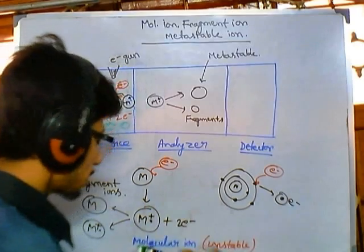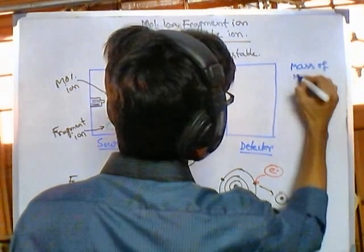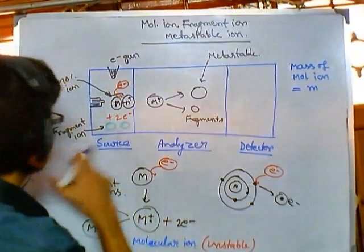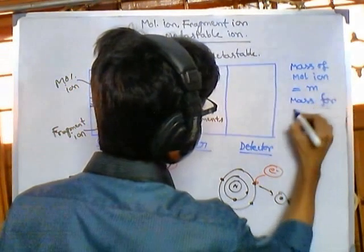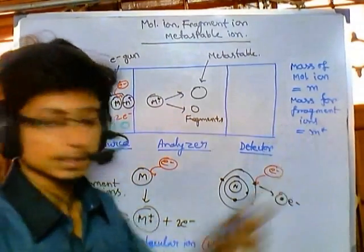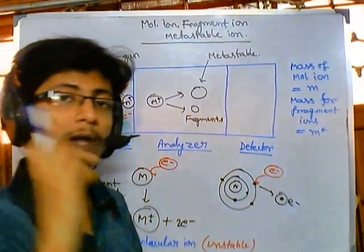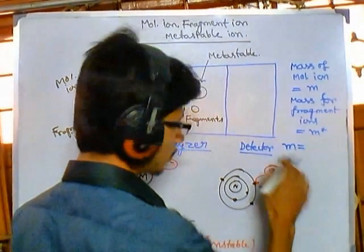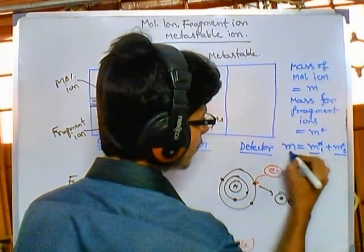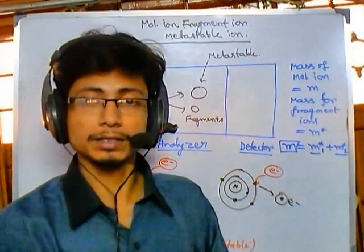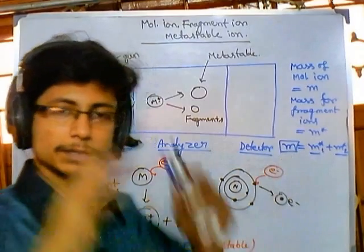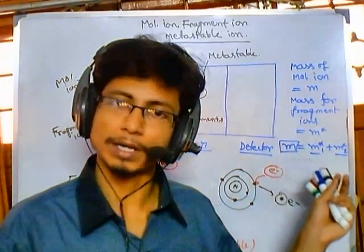For the mass of molecular ions and fragment ions: the mass of the molecular ion is denoted as small m. The mass for fragment ions is also denoted similarly. If two fragments are generated from one molecular ion with mass m, the sum of the masses of all those fragment ions will give rise to the mass of the molecular ion. So if we add all the fragment masses we get the molecular ion mass.